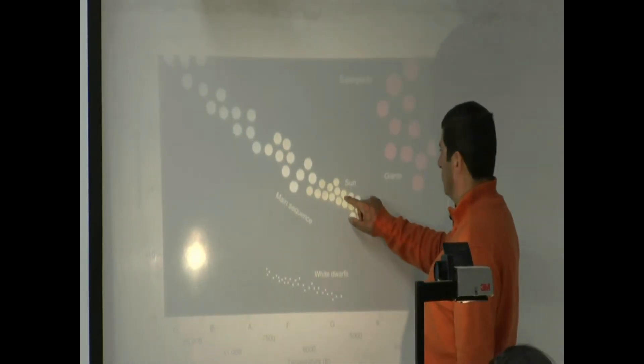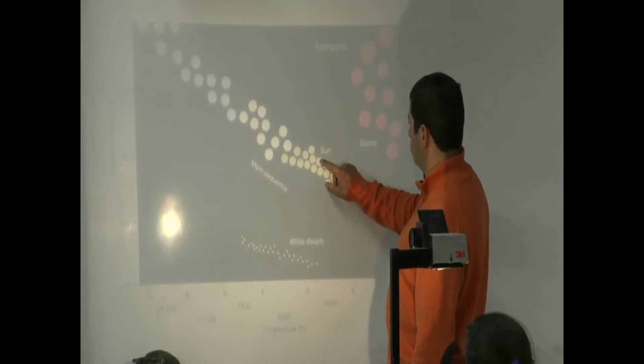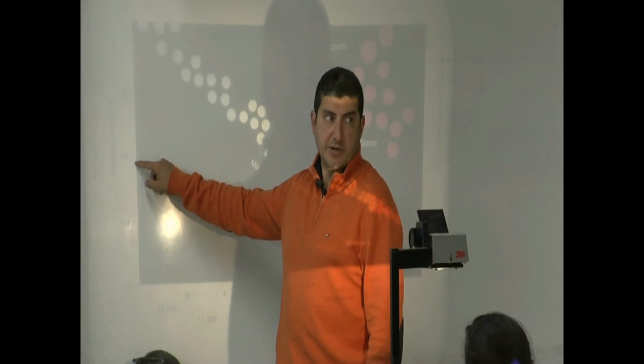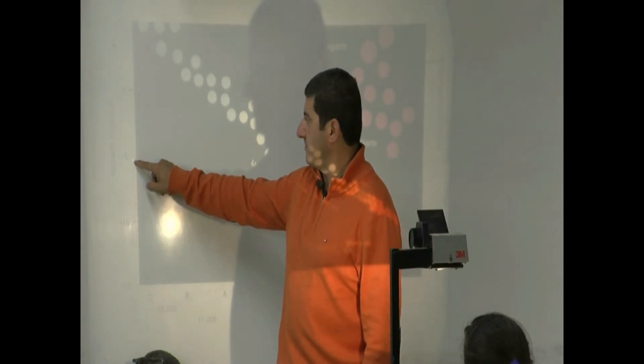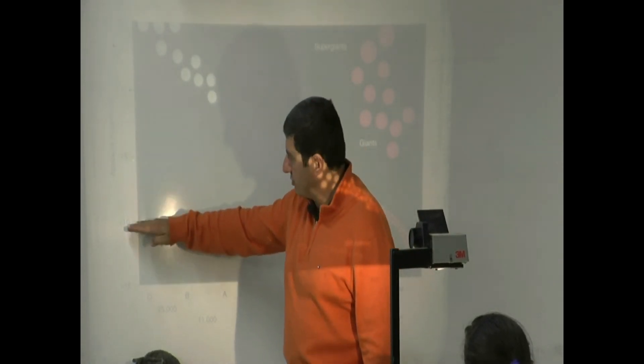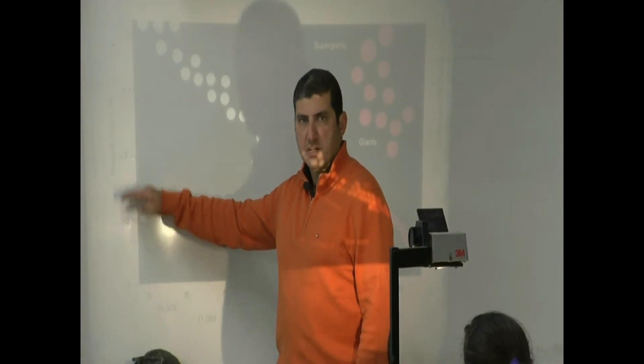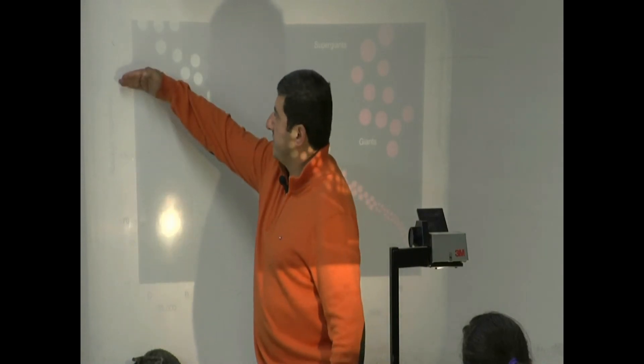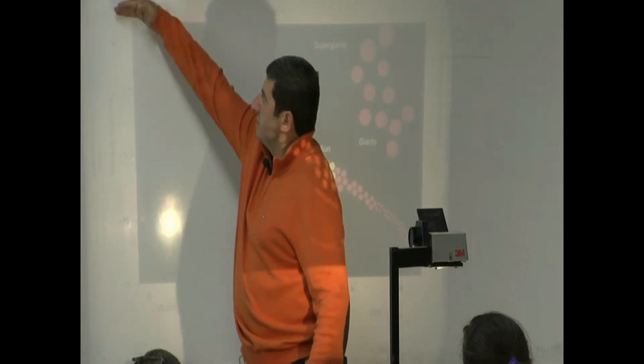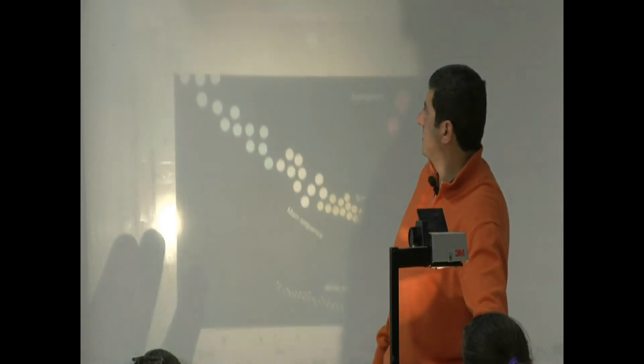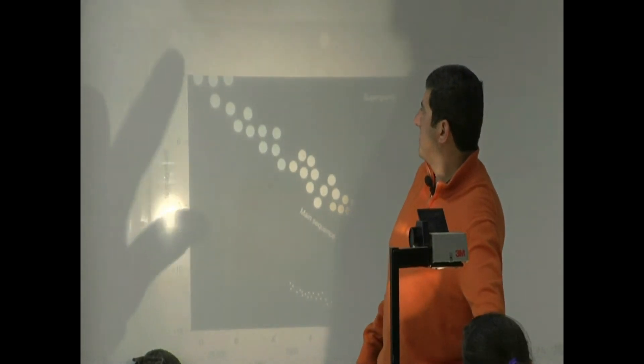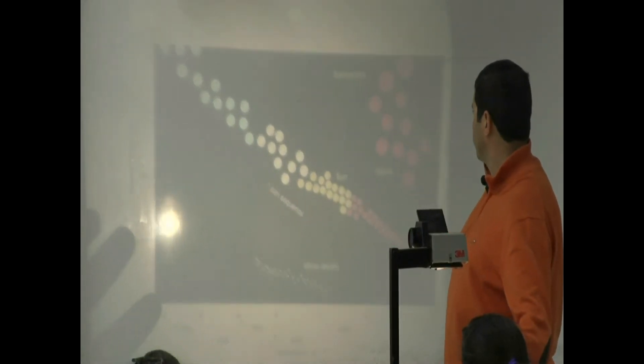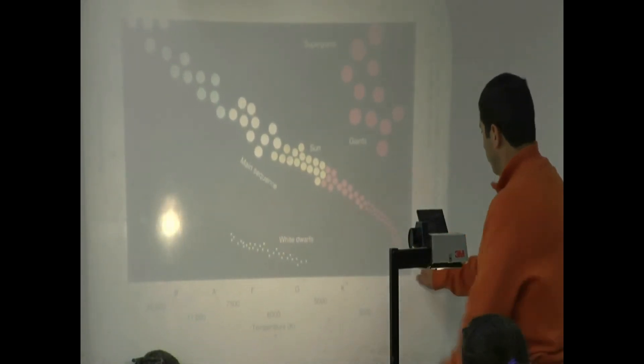Remember the sun should get a 4.83 on the Hipparchus scale, so almost a 5. And then as you go down, plus 10 means 100 times dimmer. Plus 15 means 100 times dimmer than that. 0 means 100 times brighter. Negative 5 means 10,000 times brighter than the sun. So as you're going this way, you get more negative, you go more positive.